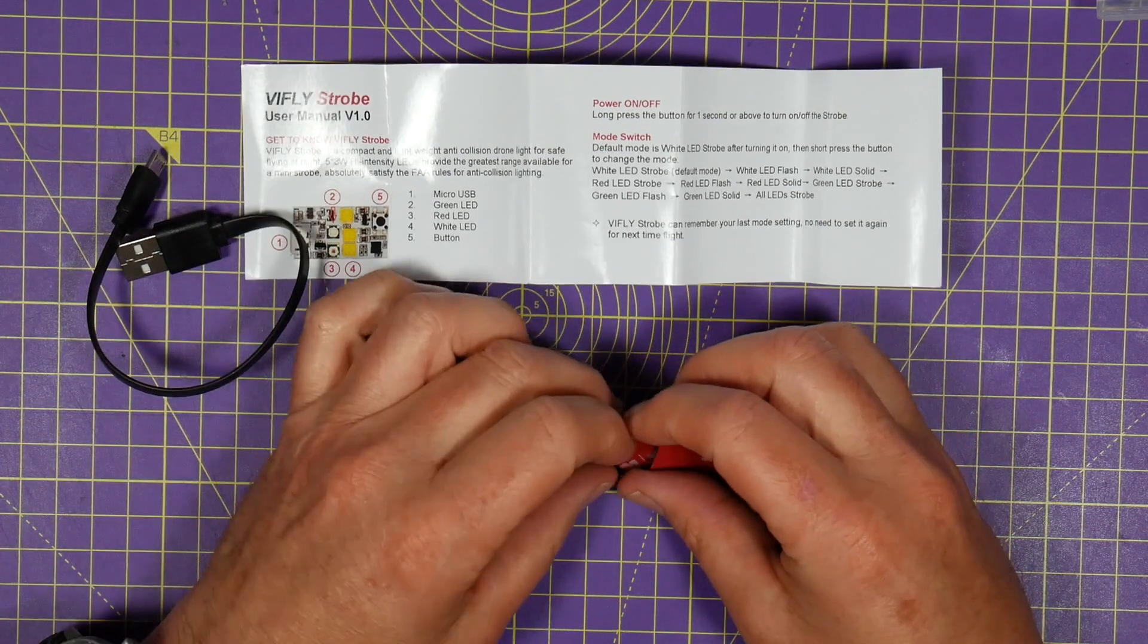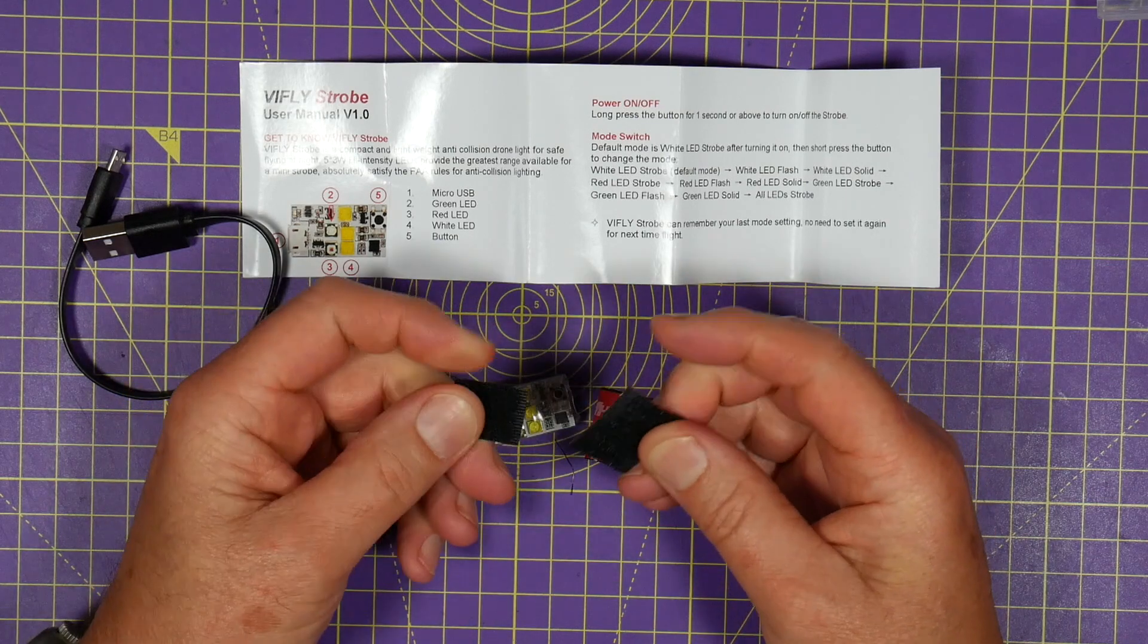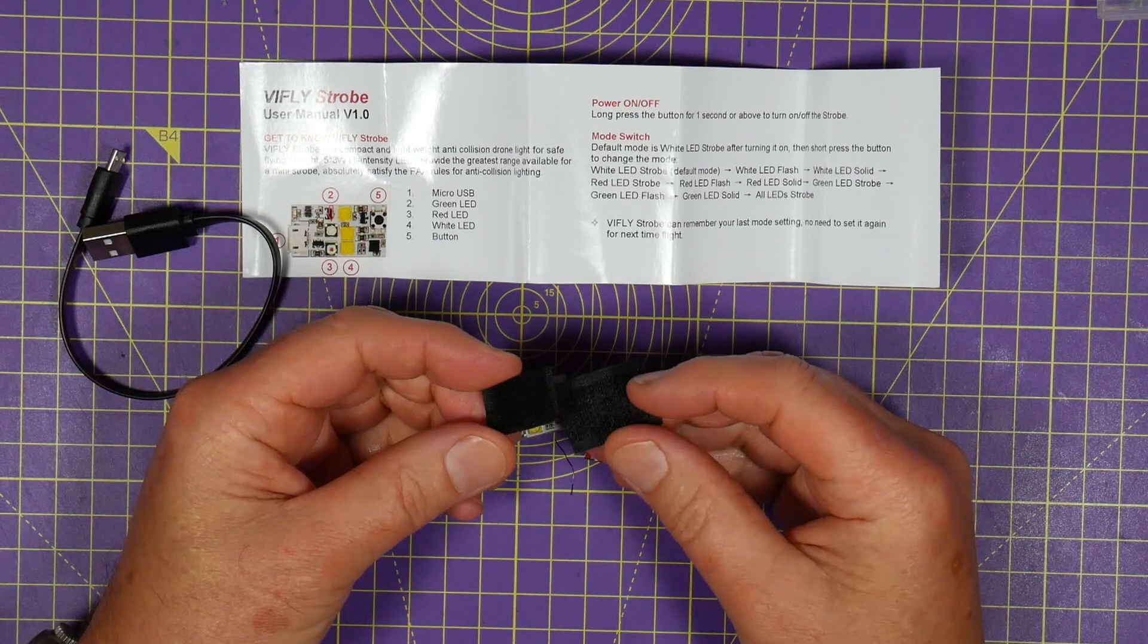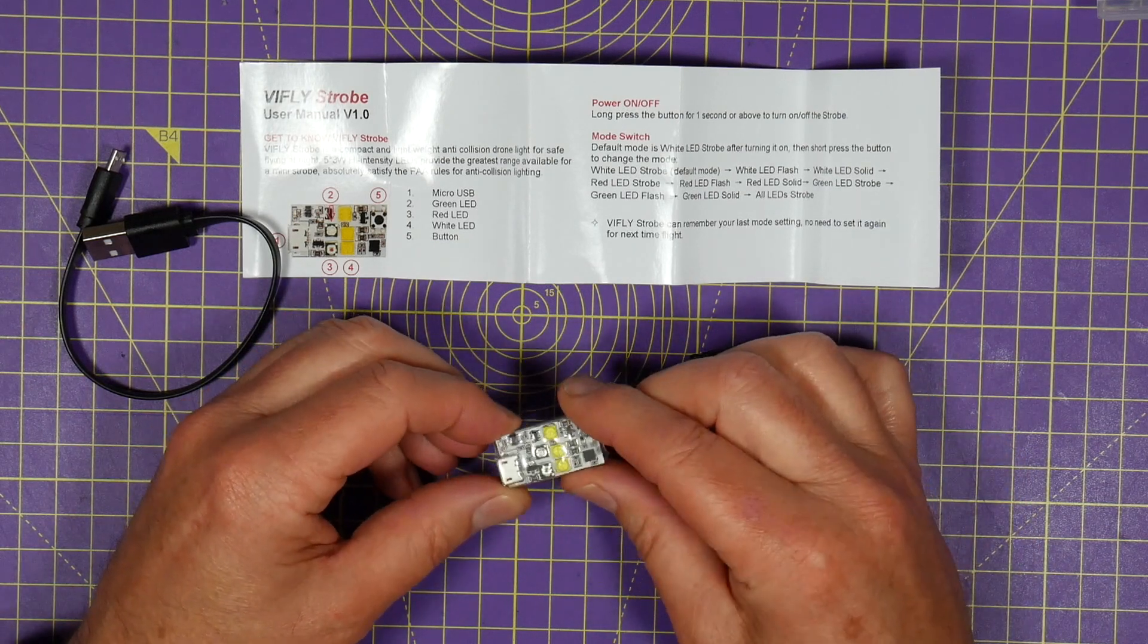Now thoughtfully they've provided some of these 3M dual lock Velcro pads so you can quickly fix it to your Mavic or whatever and you're legal to fly at night because these are visible up to three plus miles away.